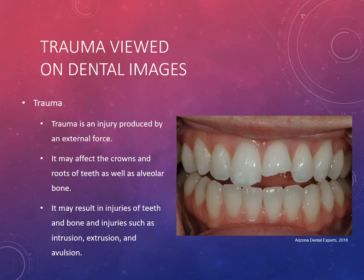Trauma is an injury produced by an external force. It can affect the crowns and roots of the teeth as well as the alveolar bone. Injuries from trauma include intrusion, extrusion, and avulsion — you'll also cover these in medical emergencies. The instructor notes personally having fractured both front teeth, which required root canals and crowns.